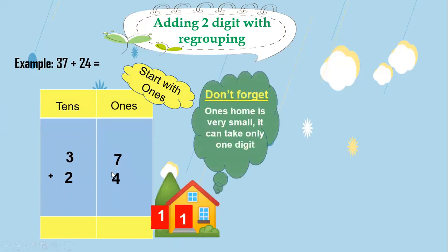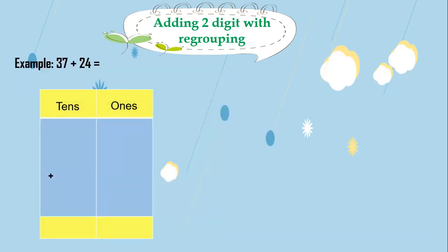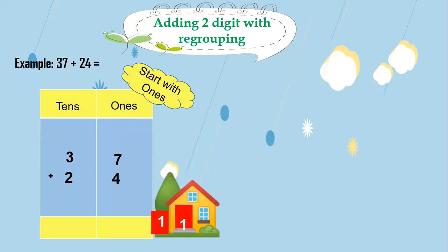7 plus 4: big number in my mind and small number on my fingers. All of you count with me — 7 in your mind and 4 on your fingers. After 7: 8, 9, 10, 11. The result equals 11. I will write the whole number — I write all the 11 here in ones.